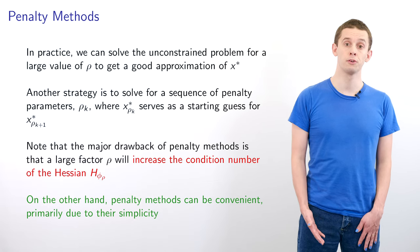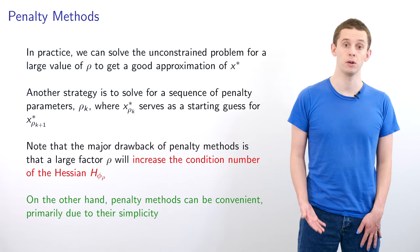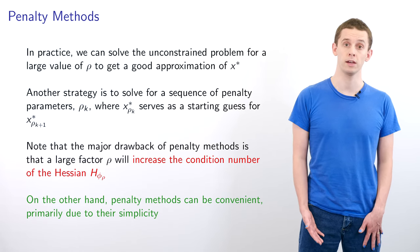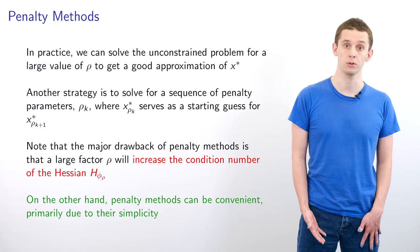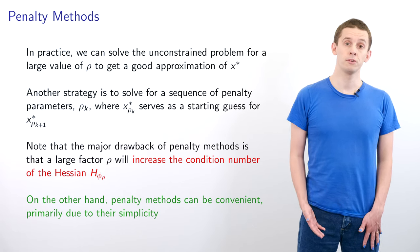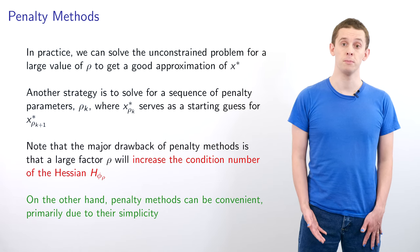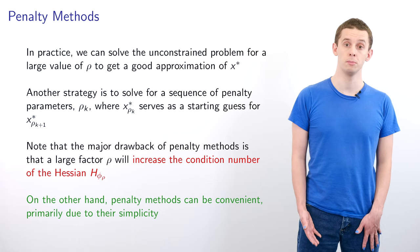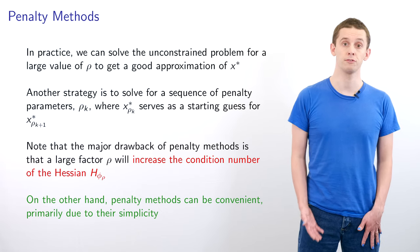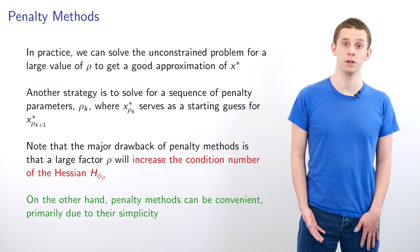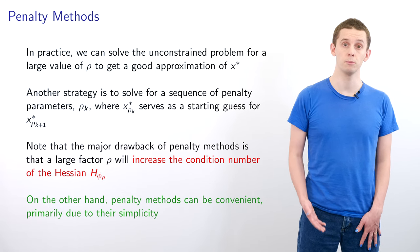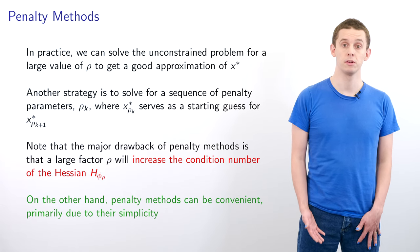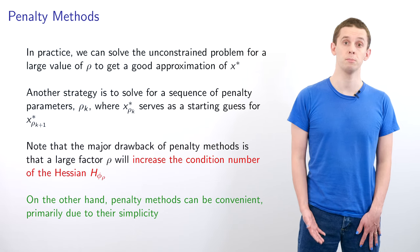Another strategy is to solve for a sequence of penalty parameters rho_k, where x*_{rho_k} is used as a starting guess to solve for x*_{rho_{k+1}}. However, a major drawback of penalty methods is that a large factor of rho will increase the condition number of the Hessian of phi_rho and will make the unconstrained problem increasingly more difficult to solve. That said, penalty methods can be convenient particularly because they are simple to implement.